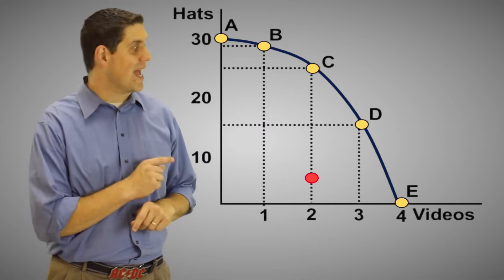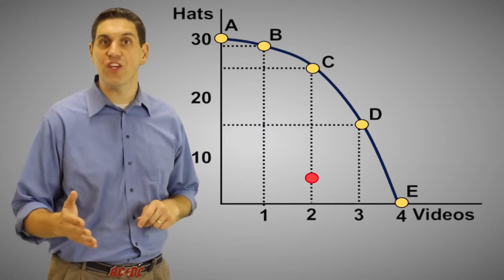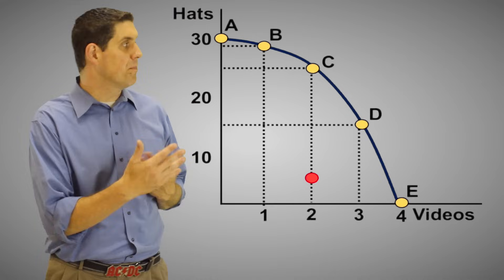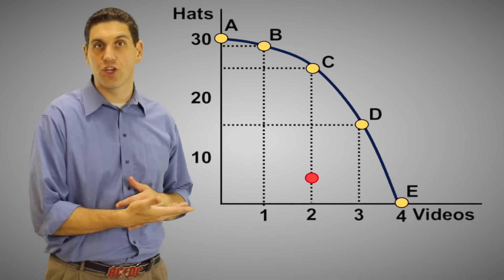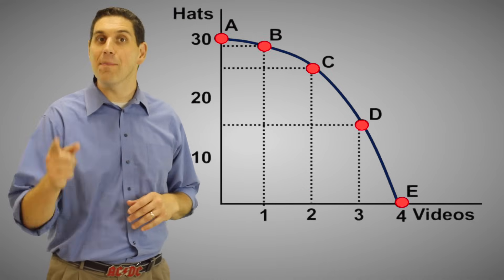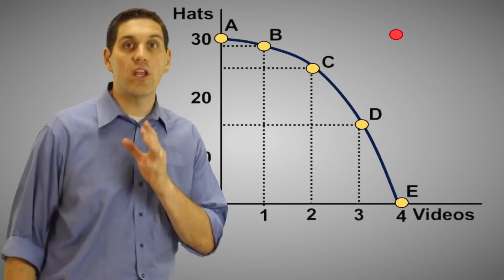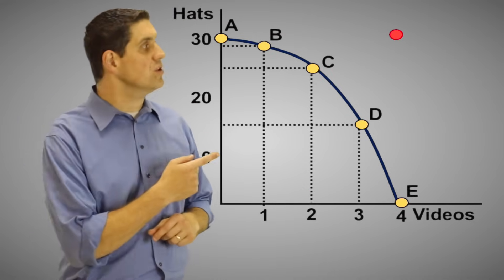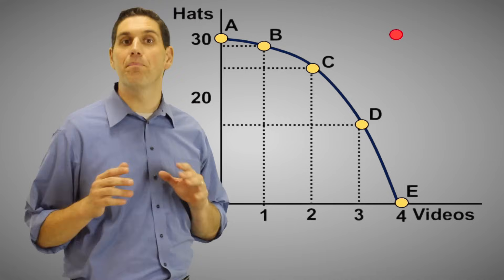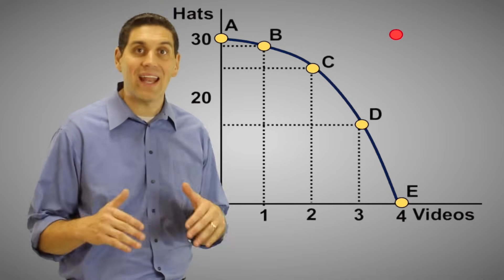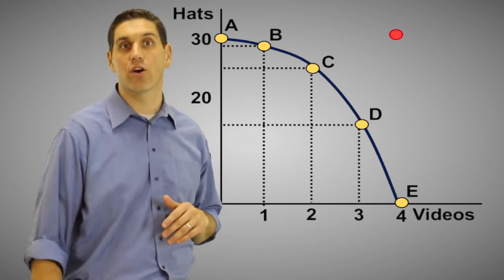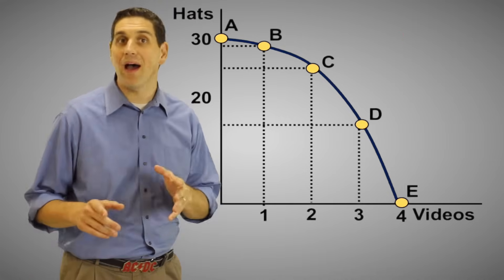We've established that any point inside the curve is inefficient because we could produce more of each good, and any point on the curve is efficient. And we know that a point outside the curve is impossible or not attainable given our current resources.